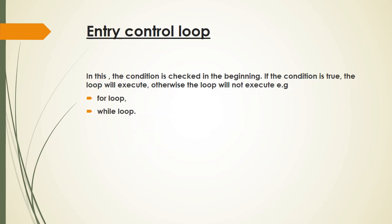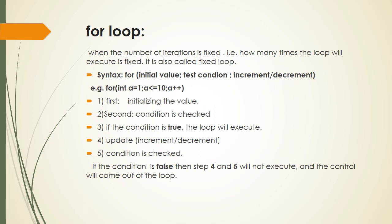What is an entry control loop? In this, the condition is checked at the beginning. If the condition is true, the loop will continue and be executed; otherwise, the loop will not execute. There are two entry control loops: one is the for loop and the second is the while loop. When the number of iterations is fixed — that is, how many times the loop will be executed is fixed — it is called a fixed loop.